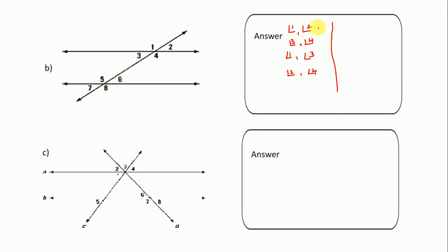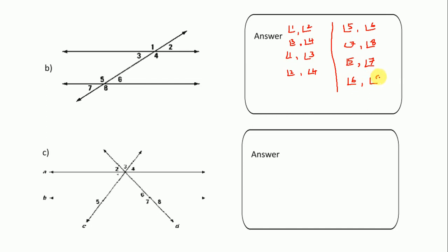Next, angles 5 and 6, 7 and 8, 5 and 7, and 6 and 8 are adjacent angle pairs.